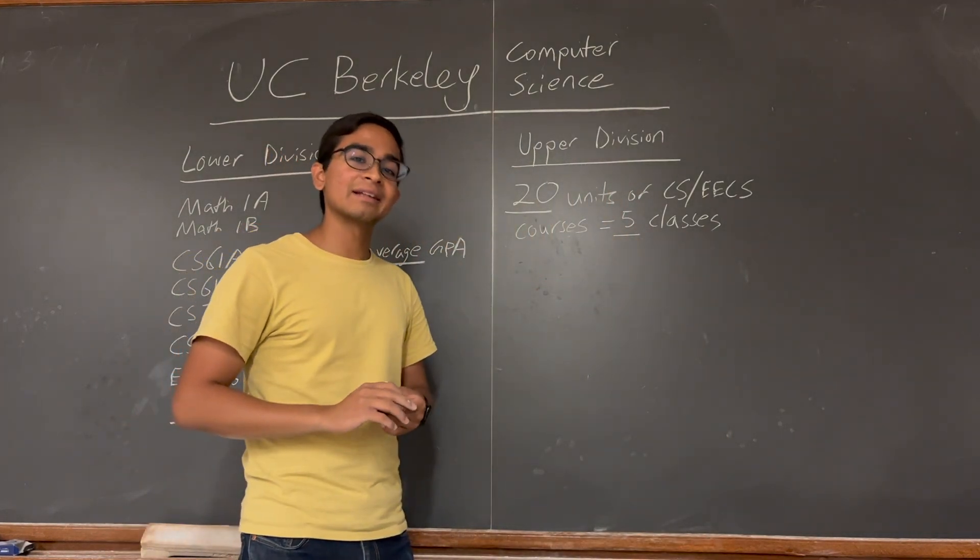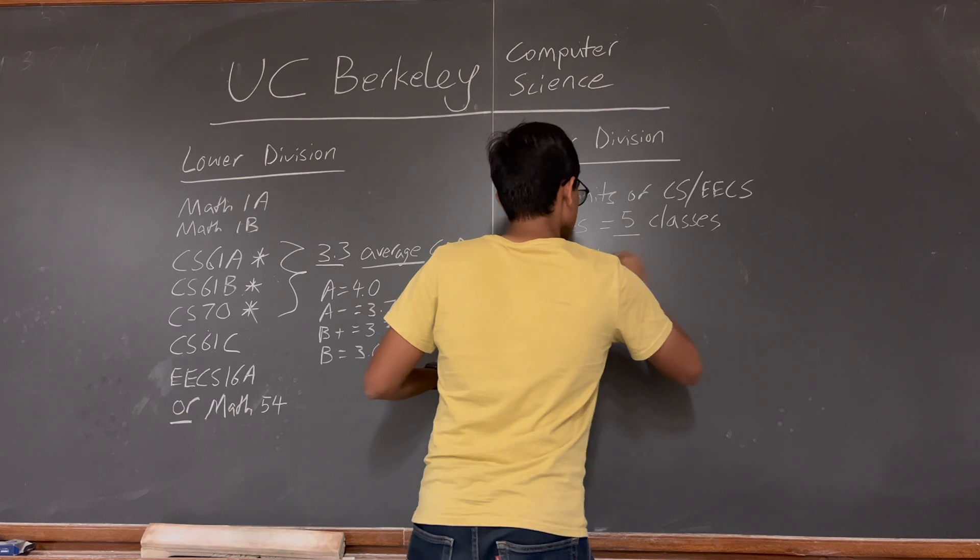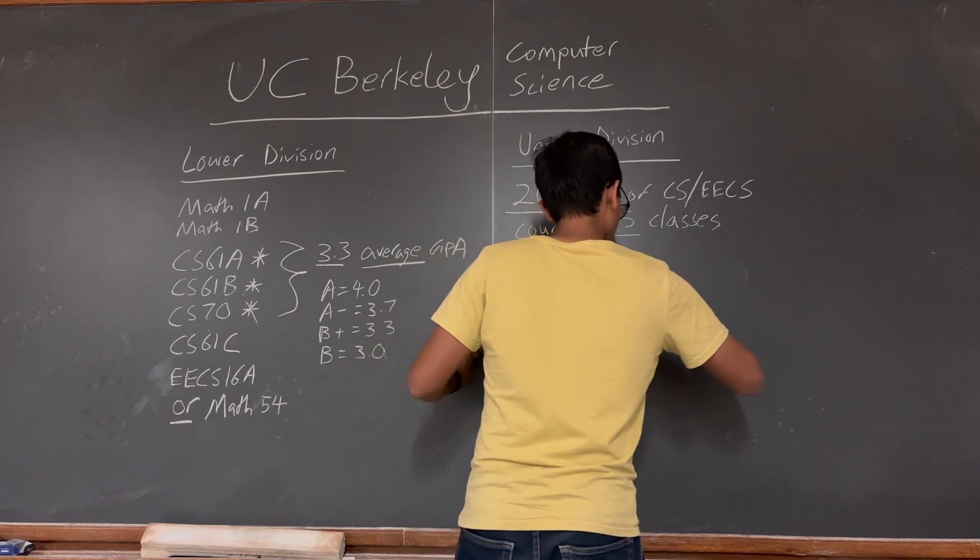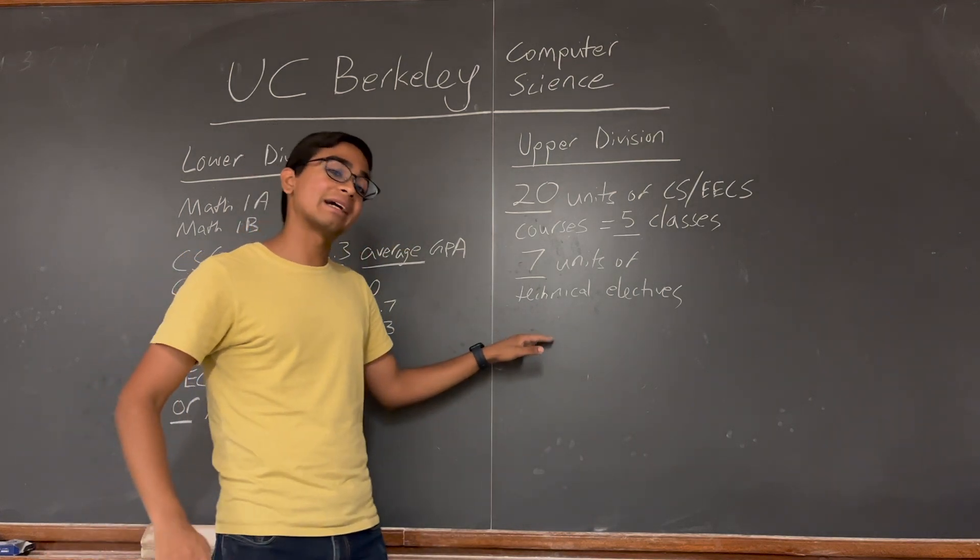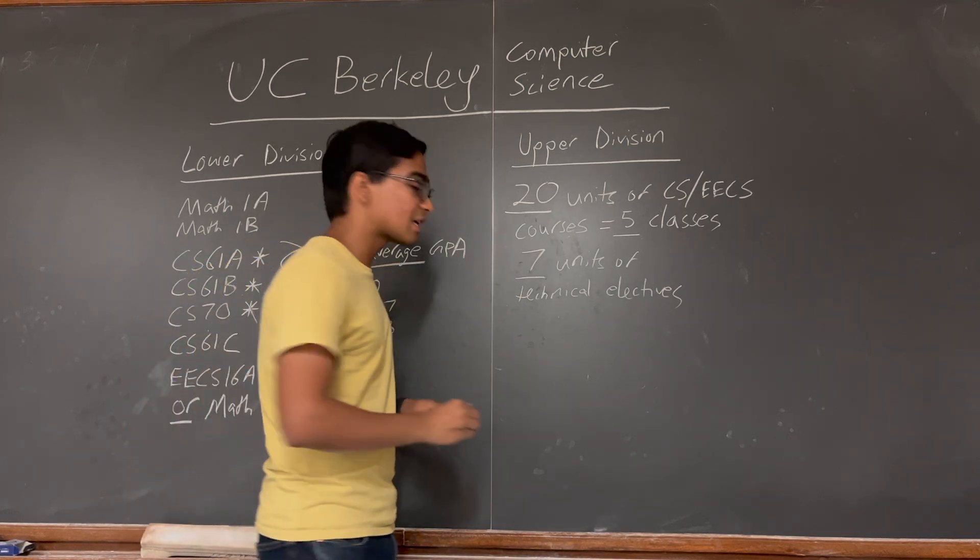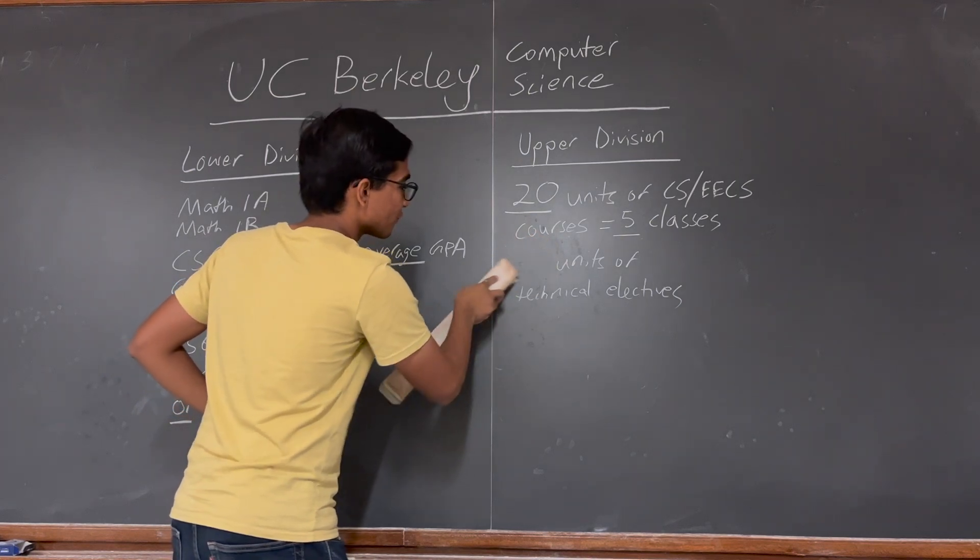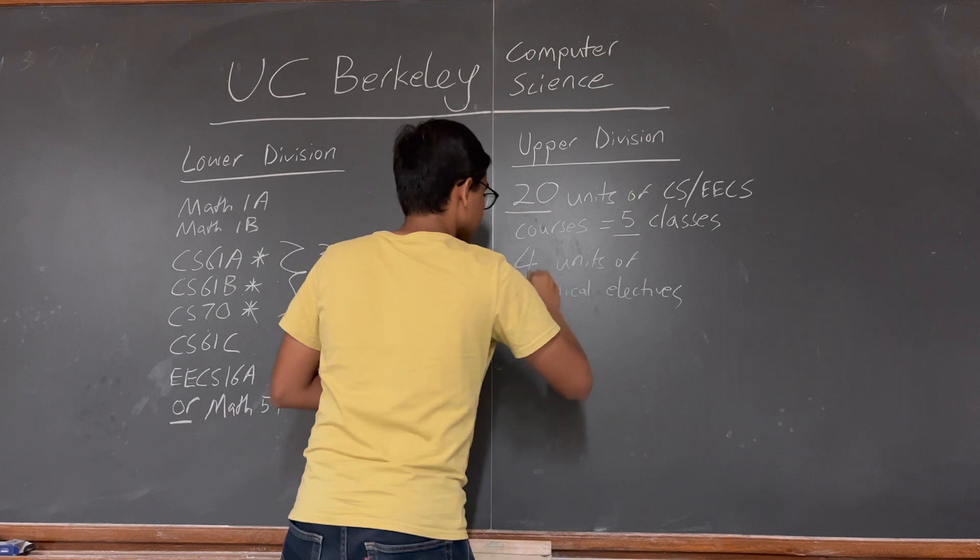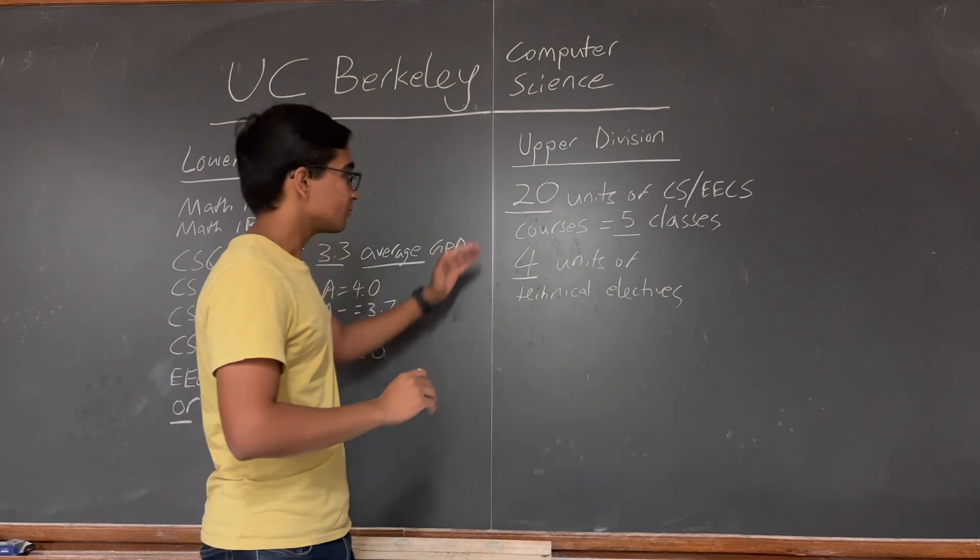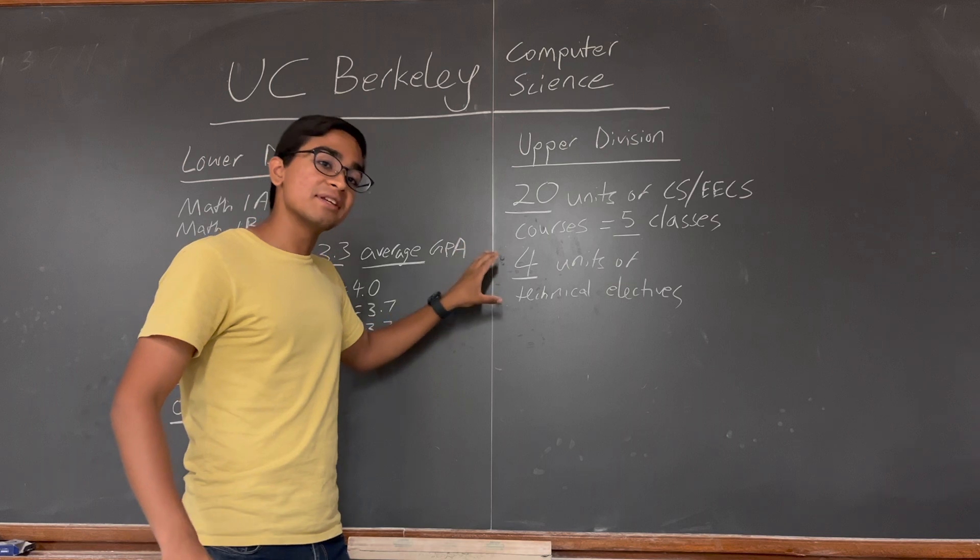We'll talk about which classes you can consider taking later. Apart from this 20 units, there's also 7 units of technical electives that you have to take. These classes are typically outside the CS major. Again, you guys are lucky. They've reduced this requirement from 7 units to 4. Let me again wipe that off the board. This means that outside the CS major, you have to take another upper division class in a different department. So these are the upper division requirements for computer science. There's a list of what classes fulfill this technical elective requirement, and this is linked in the description below.